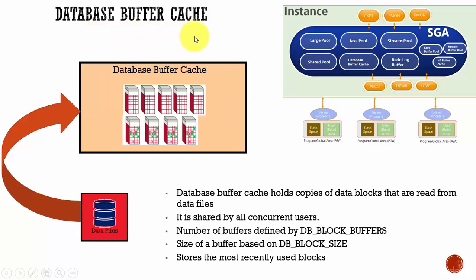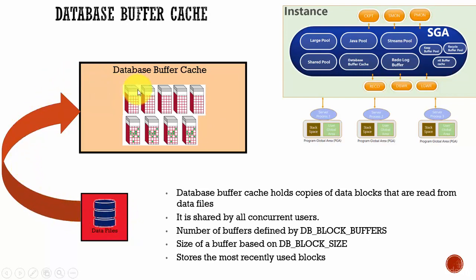Let's learn about database buffer cache. Database buffer cache is part of your shared global area. This database buffer cache holds the data blocks that are read from the data files. The data blocks are read from the data files and stored in the database buffer cache. From here, the user can read the data. All the users who are concurrently connected to the instance can share the data blocks stored in this database buffer cache.